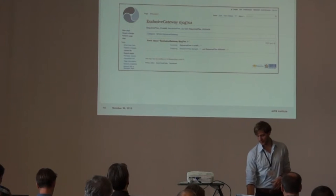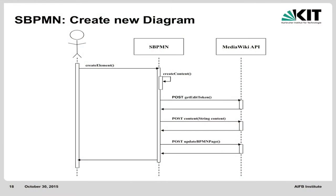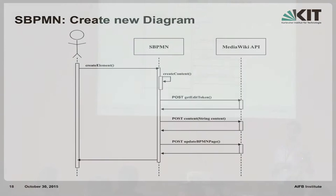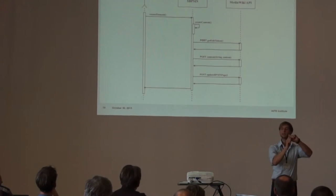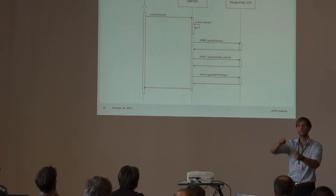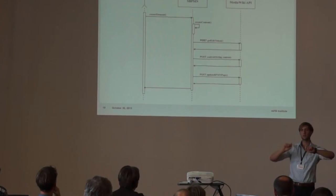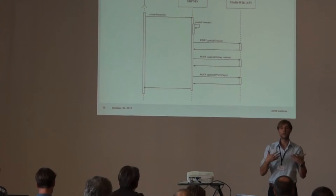What happens in the background is shown in a UML sequence diagram. When the user takes an element and drops it into the page, the content is created — checking if there is already an incoming sequence flow or a label. It creates the corresponding content for the digital page, gets the token, and posts the content on the page. If the page doesn't exist, it creates a new page. Finally, it updates the BPMN process page, so each process has its own BPMN page listing all its elements.